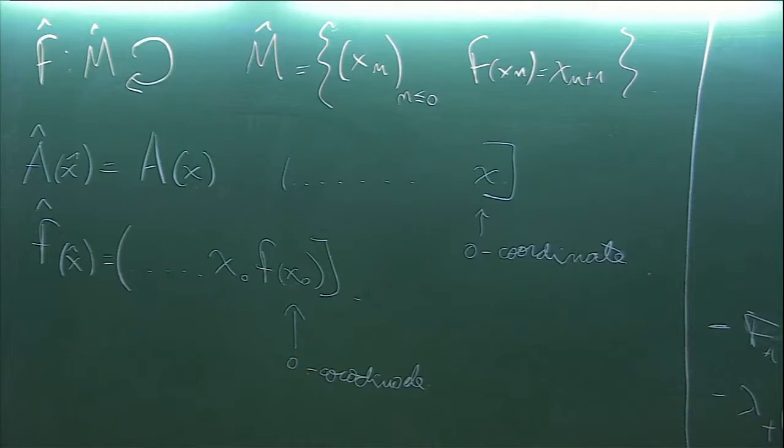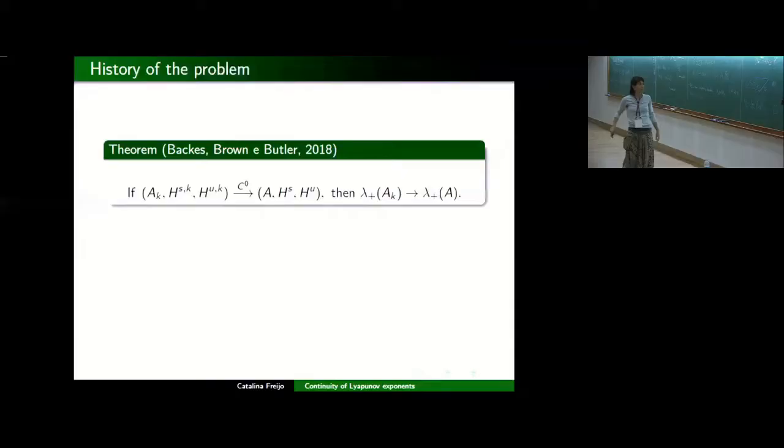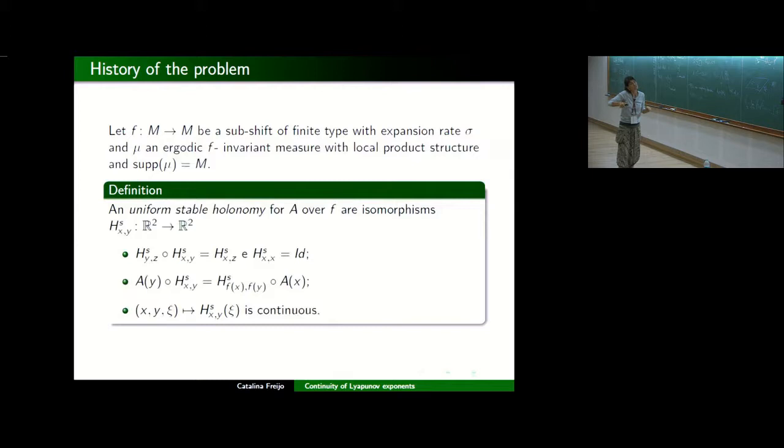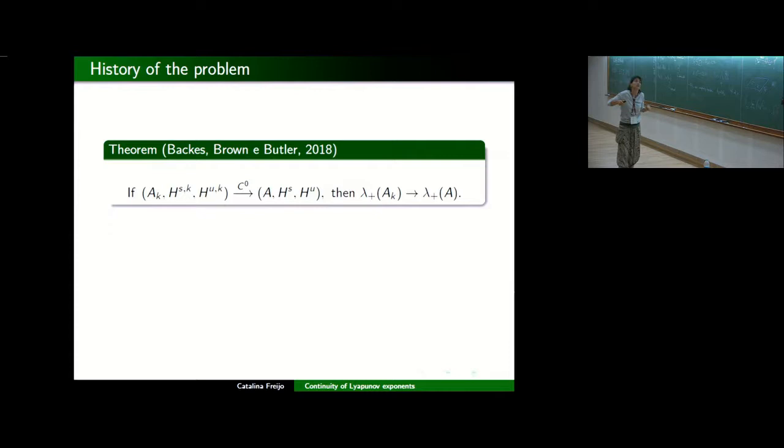So in this example, we have a holonomy, a stable holonomy, in every point that is the identity. So in this context, we have a well-known result that was recently published by Bakes, Brown, and Butler that says, if we have both uniform holonomies, by uniform I'm saying that this is continuous in every point and it is defined in every point, so if we have both holonomies and both are converging to a cocycle with also holonomies and everything is converging nicely, then the Lyapunov exponents are continuous.